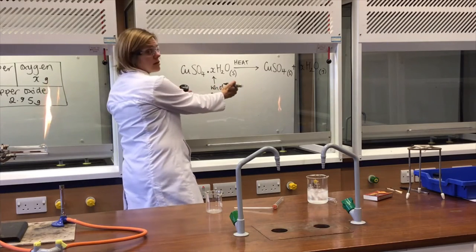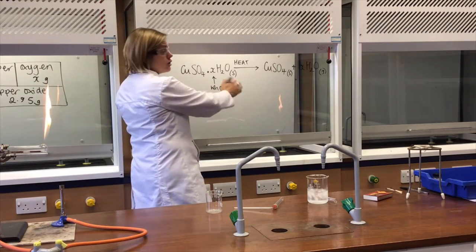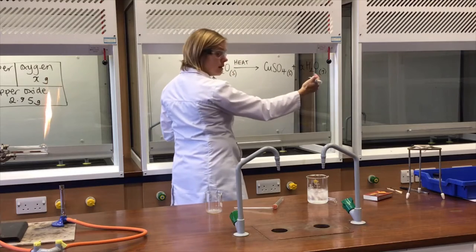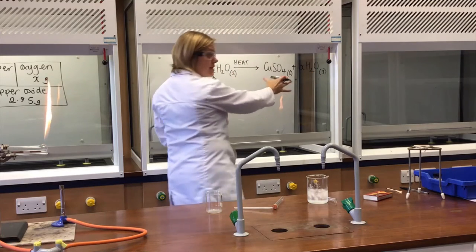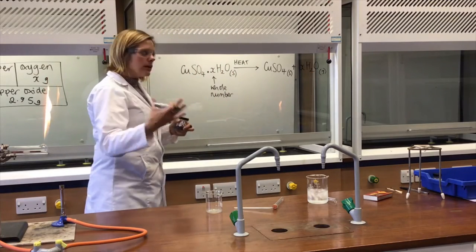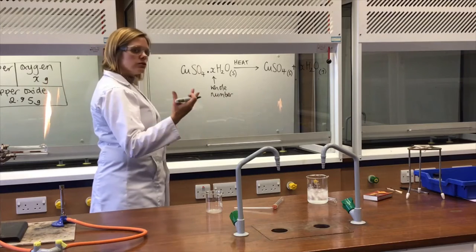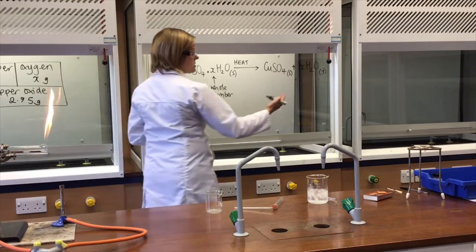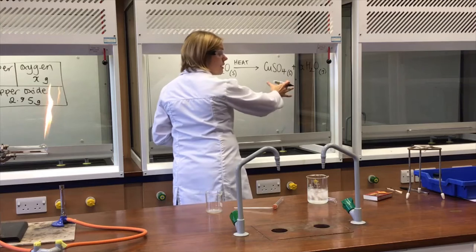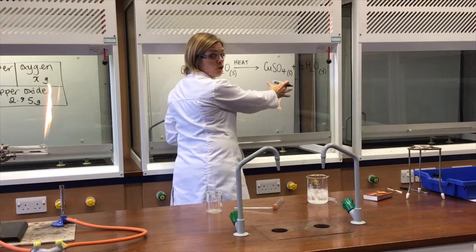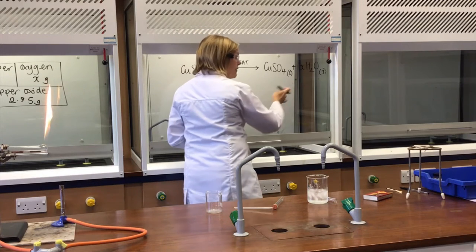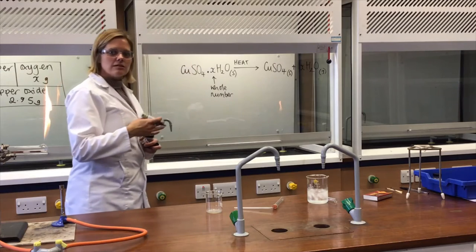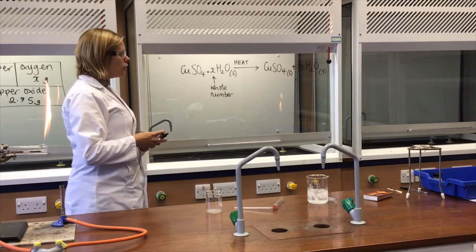If we heat a known mass of this, drive off that water as steam, and measure the mass of the solid left over, then we can calculate the mass of water released and therefore the moles of water released. We can calculate the moles of CuSO4 left over, and therefore do a ratio and work out what X is as a whole number.